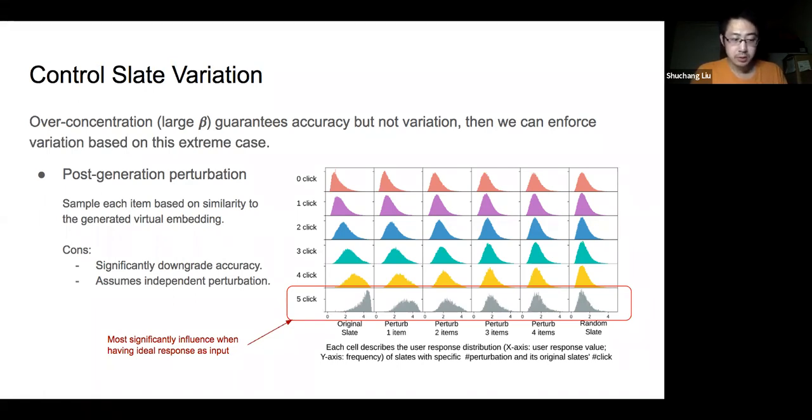However, this approach is hard to control and may significantly downgrade generative performance. As you can see in the figure for a slate of size 5 where the optimal user response as condition corresponds to the last row, changing two items already makes the user response distribution close to that of a random slate. So post-generation perturbation ignores the fact that items are related to each other in the slate and may influence user satisfaction of the entire slate.